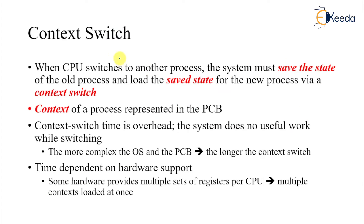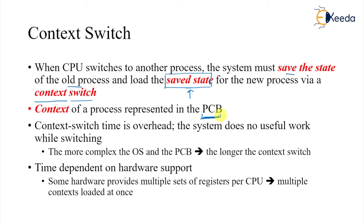When a CPU switches from one process to another, the system must save the state of the old process. If it is terminating you only need to save; but if it is going into a blocked or ready state, you need to save that process and then load the saved state of the new process via a context switch. The context of a process is represented by the PCB — the program counter, process scheduling information, accounting information, I/O files, and everything else.